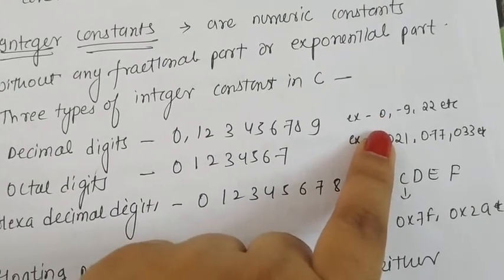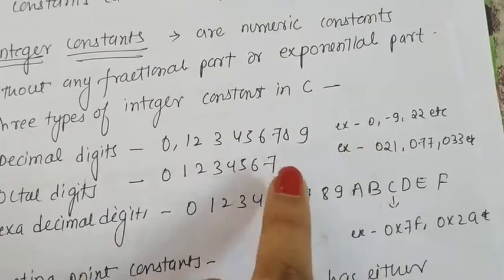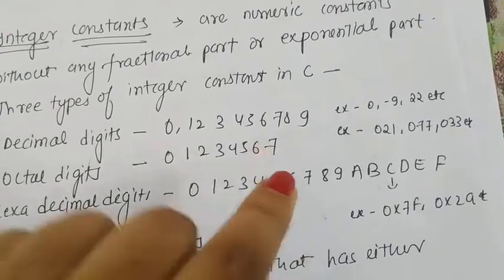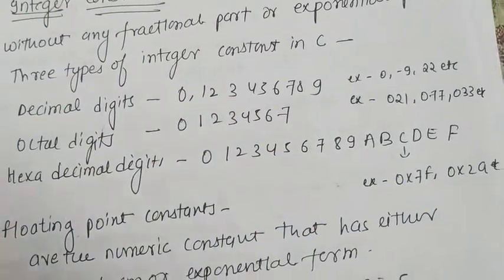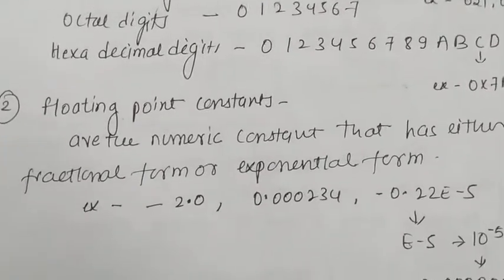Decimal digits may be minus or plus, but should not have a fractional or exponential part. Whatever digit you have should not contain an exponential part.